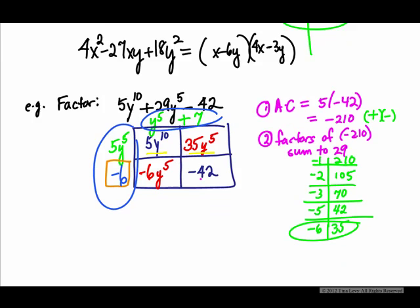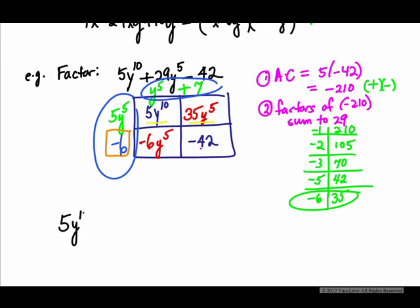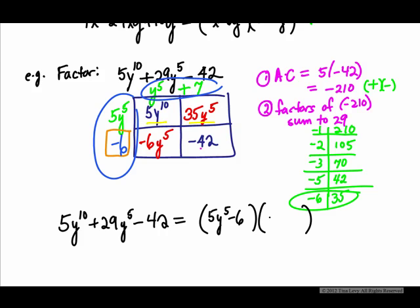Very simply, from the table, we can say 5y¹⁰ + 29y⁵ - 42 can be factored, and it does not matter which one we put first. 5y⁵ - 6, y⁵ + 7. And that's the tic-tac-toe method.